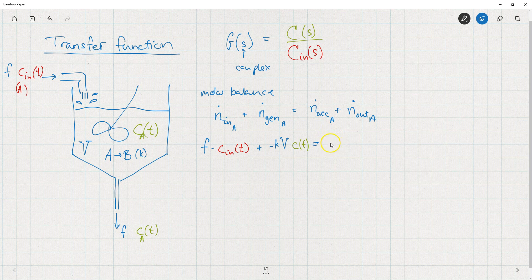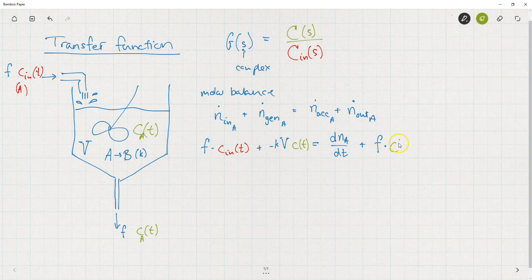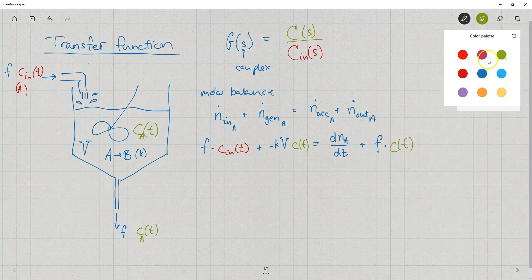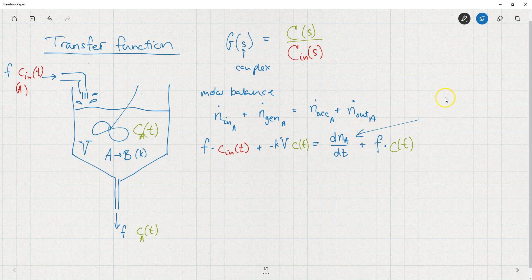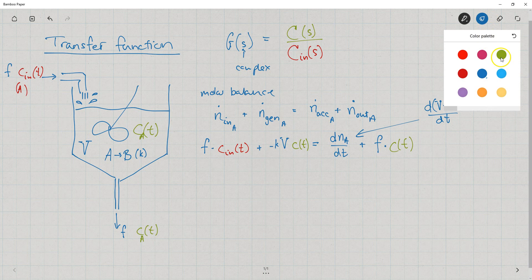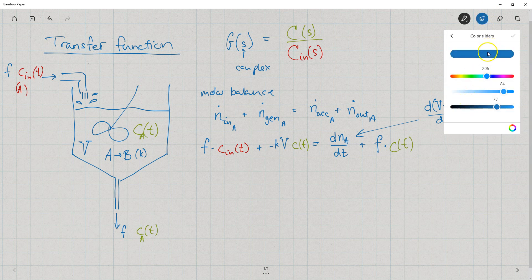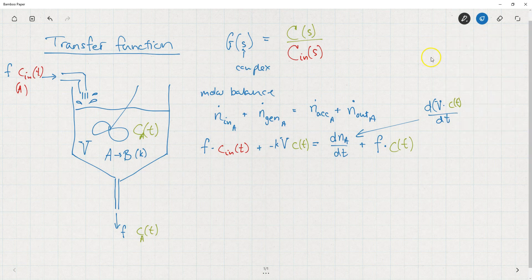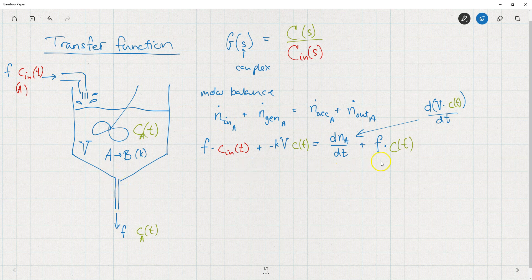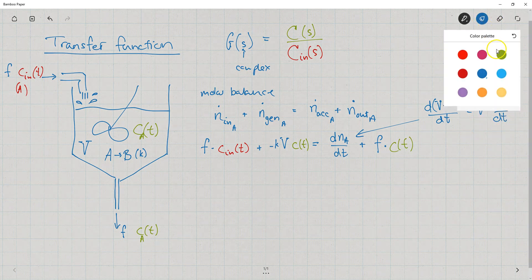And the accumulation, that would be dN_A/dT, plus the amount that leaves the tank. That's F times C of T. And we will replace this term here by d(volume times concentration) C of T. And because the volume is constant, we have the same flow entering and leaving the system. We can pull the volume outside, and we get V dC(T)/dT.